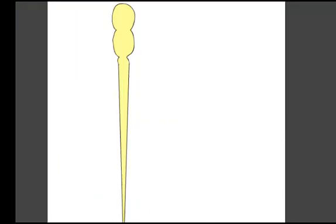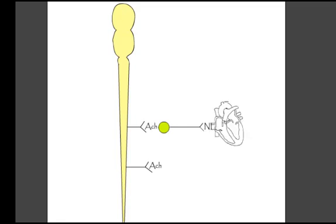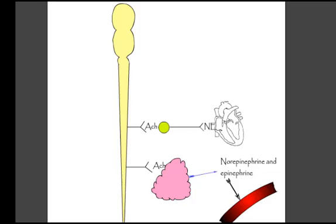The sympathetic nervous system consists of thoracic and lumbar nerves with short preganglionic and long postganglionic fibers. The sympathetic system includes the adrenal medulla, which releases norepinephrine and epinephrine into the blood.